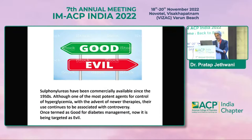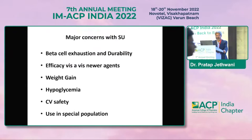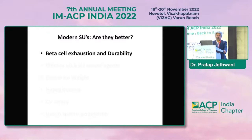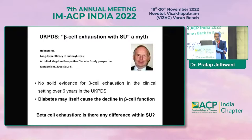After 2014 we observed a sea change in the management of type 2 diabetes. We now talk about comorbidity-based selection of oral anti-diabetic drugs because many newer drugs have pleiotropic benefits, and because of that, sulfonylureas — considered good agents for diabetes management — are being sidelined. I will try to justify the major concerns with sulfonylurea, starting with the first myth: beta cell exhaustion and durability. Do sulfonylureas result in beta cell exhaustion and accelerate the decline in beta cell function? This is a myth. Even UKPDS data — the principal investigator Professor Holman himself said there is no solid evidence for beta cell exhaustion in the clinical setting over six years in UKPDS.